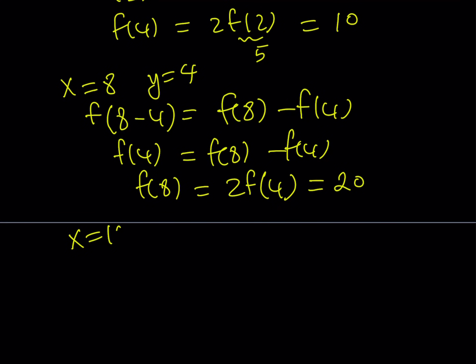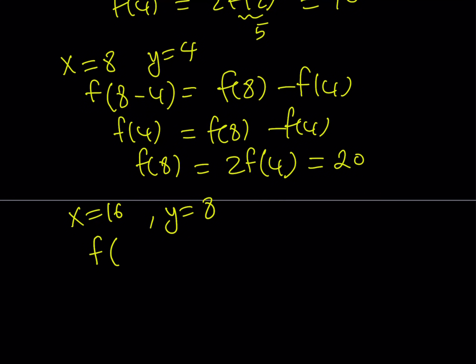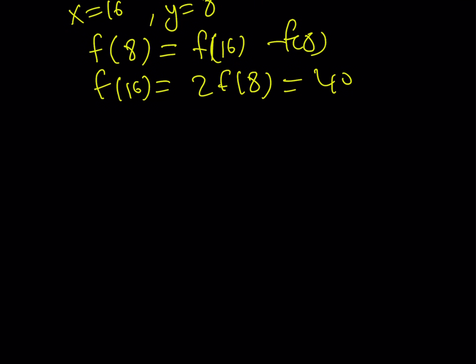And finally, I'm going to replace x with 16 and y with 8. That is going to give me f(16-8), which is f(8), equals f(16) - f(8). And this means f(16) can be written as 2 times f(8). And f(8) = 20. Therefore, f(16) is going to be 40.